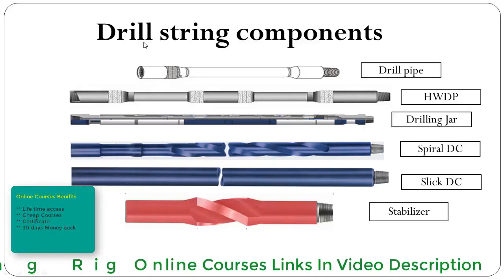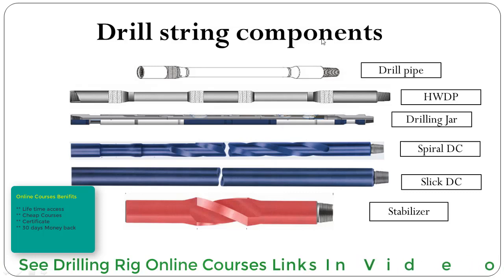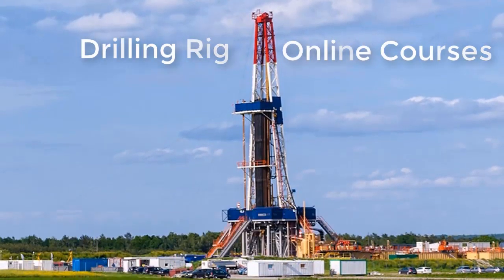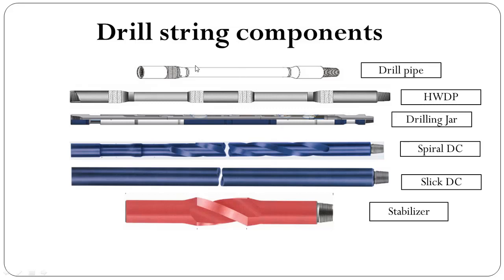The drill string component — because dual-string components are part of the rotary system. As per the definition of rotary system, all equipment which are tubulars used to achieve bit rotation are part of the rotary system. The first and basic component of the drill string is the drill pipe. This is a hollow steel drill pipe with tool joint pin and box. The drill pipe may be of different grade, weight, and connection.